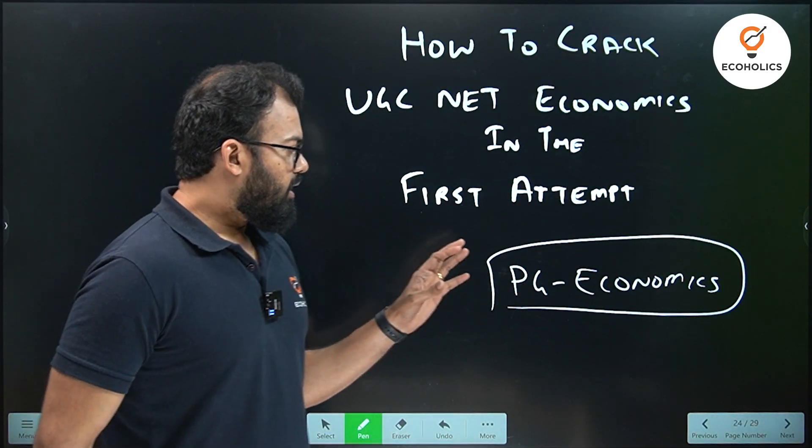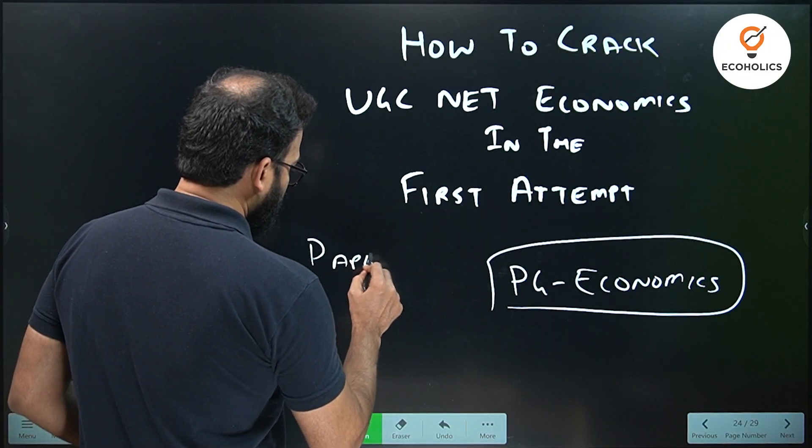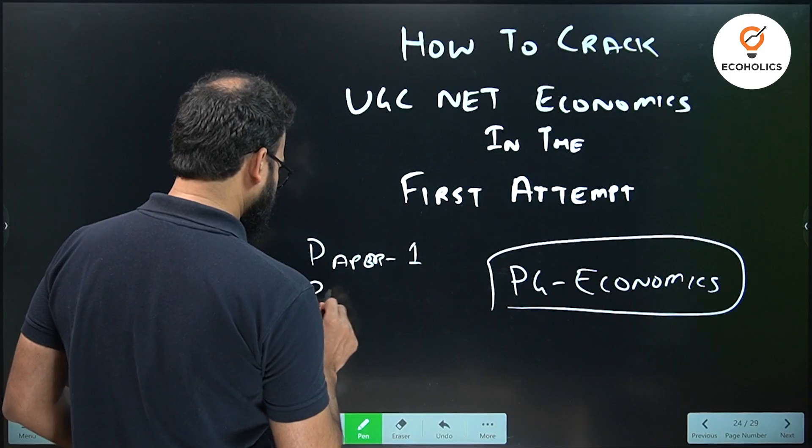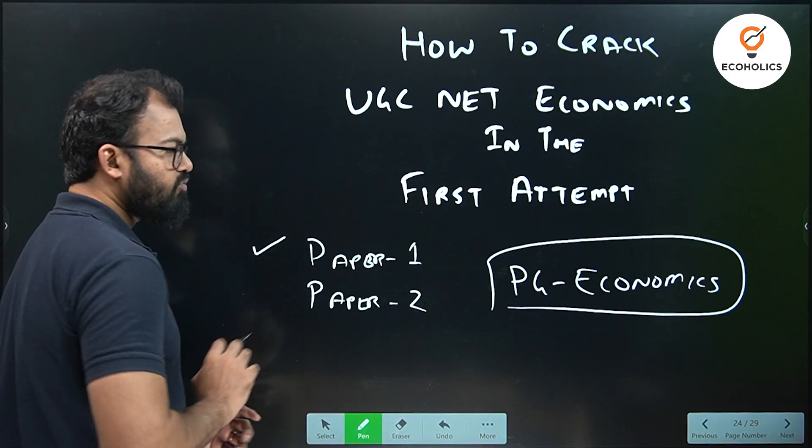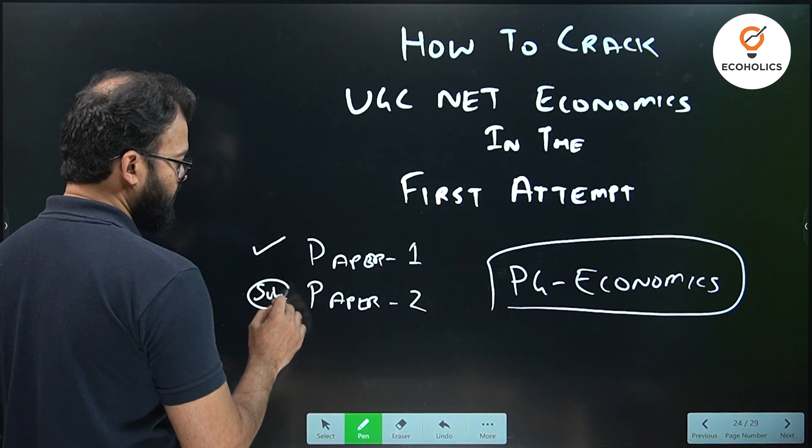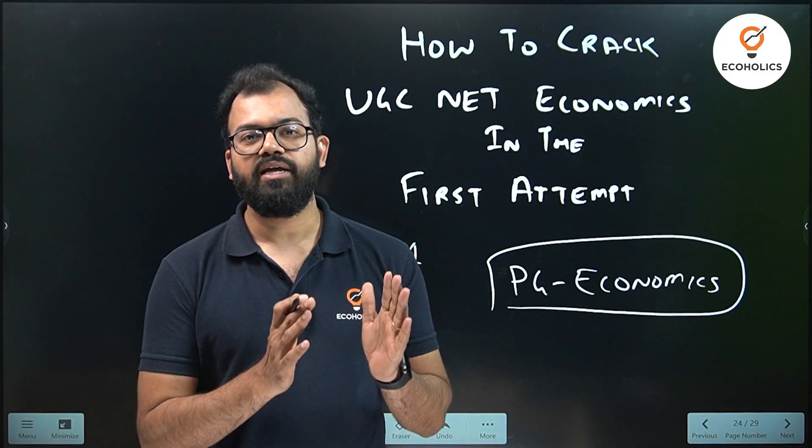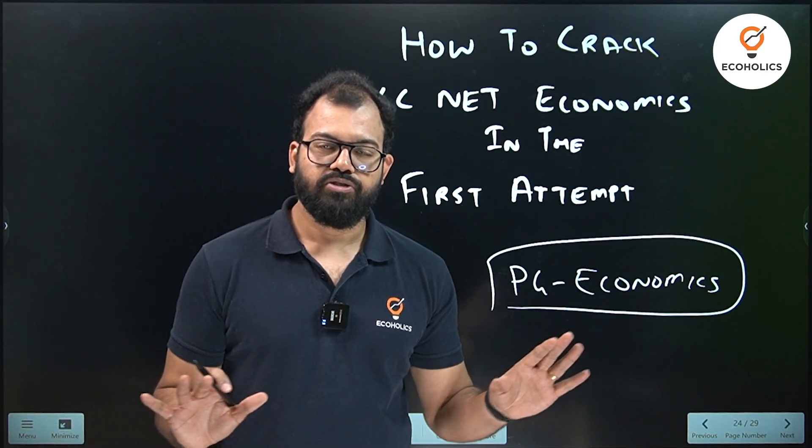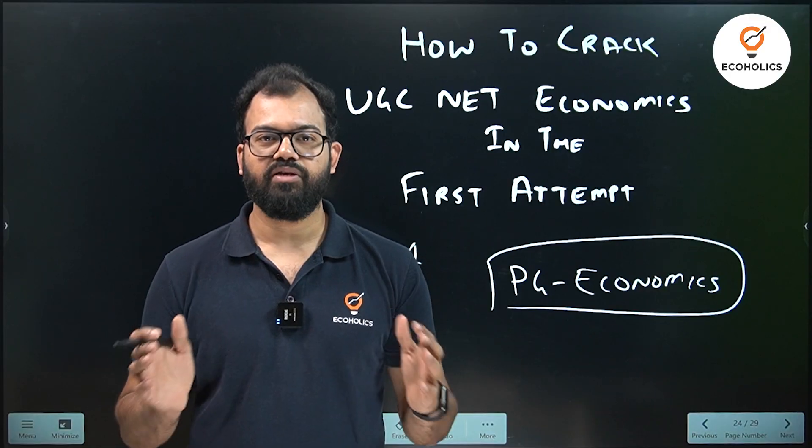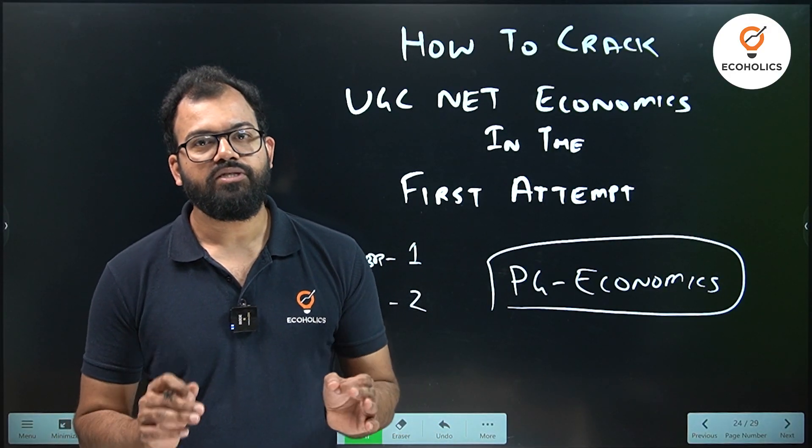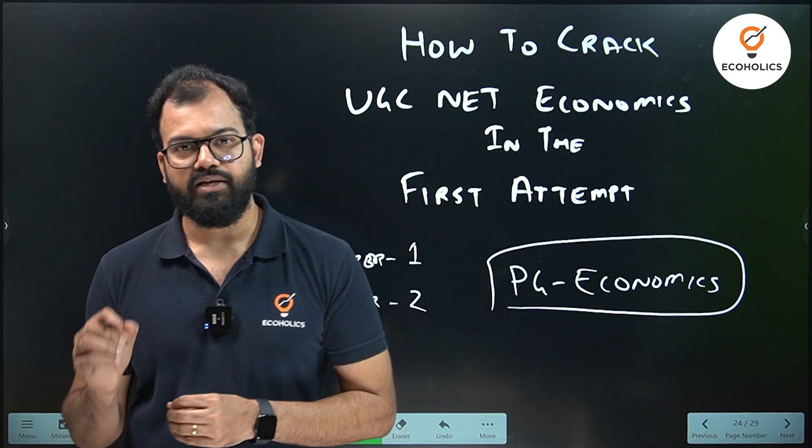In this video, we won't discuss the paper pattern in detail because we've already covered that in other videos. If you're from any other subject, you can give the exam in your master's degree subject. There are two papers: Paper 1 is common for all subjects, and Paper 2 is your subject-related, so here it's economics related. In the syllabus of UGC NET Economics, we have 10 units starting from microeconomics to Indian economy. You can download the syllabus from the link given in the description.